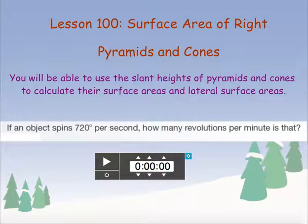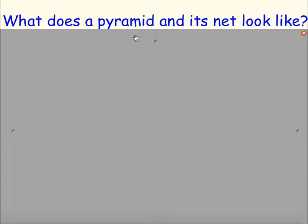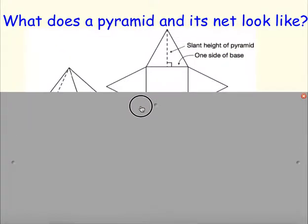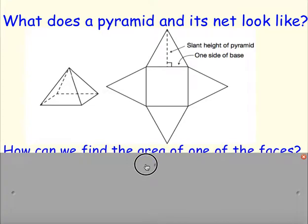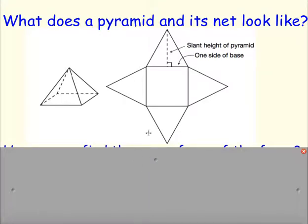The first thing we need to think about is looking at our pyramid and what its net looks like, because that's what we're focused on — the area of each side. If we had a right pyramid with a square base, we would have a square base and then triangles coming off of each side. We can think about that slant height we learned about recently — that is the height of each of those triangles.